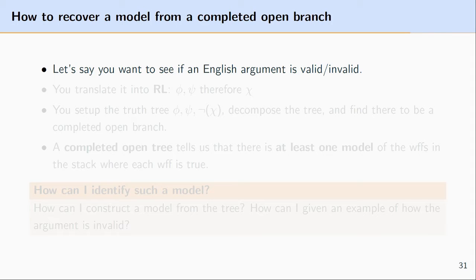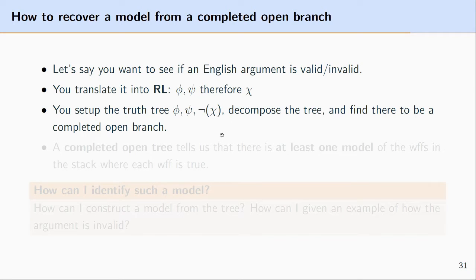Let's say you have an English argument you want to test to see if it's valid or invalid. What you do is start by translating it into predicate logic — phi, psi, and chi — let's say these are predicate logic well-formed formulas. Then you set up the truth tree by taking the premises and then the negation of the conclusion, stacking these particular formulas. Then you decompose the tree using the decomposition rules and look to see if there's a completed open branch or if the tree is closed.